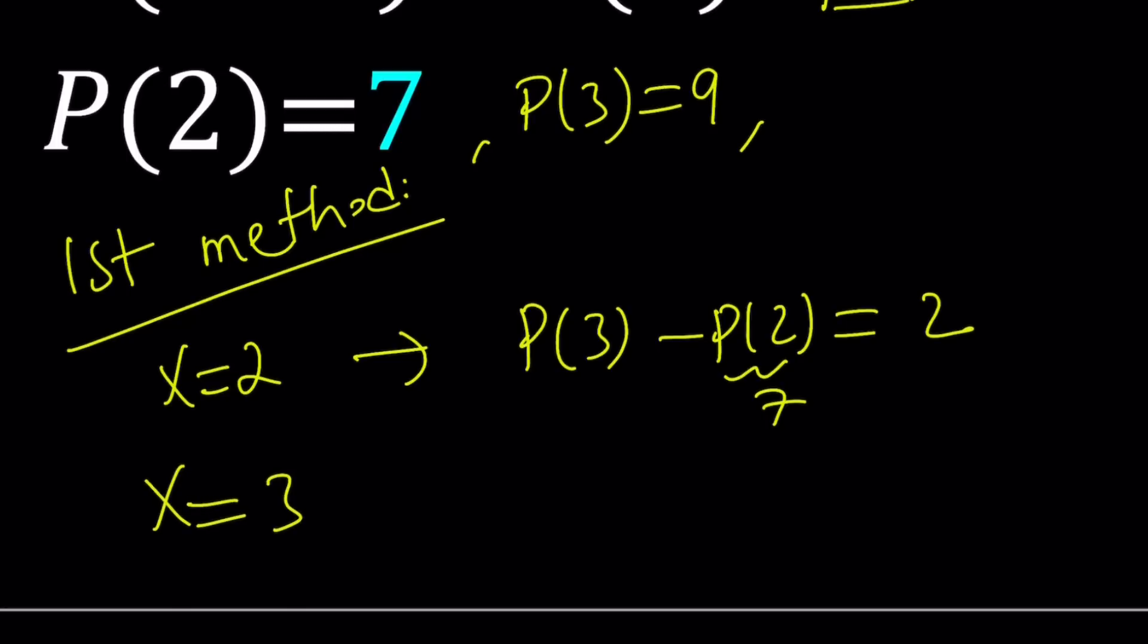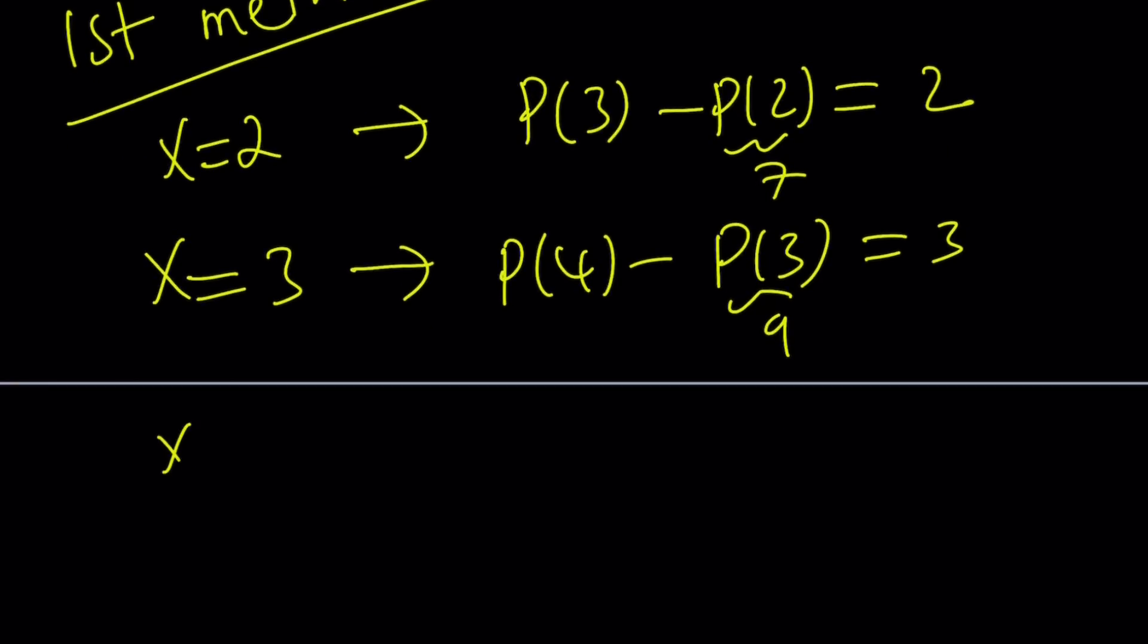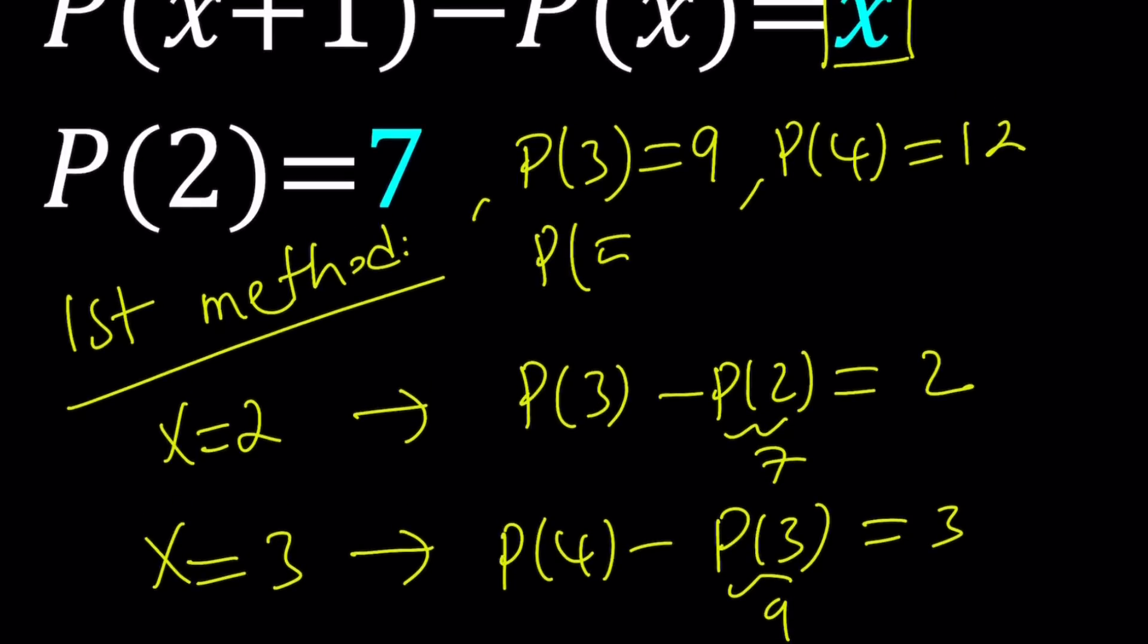And then I'm going to replace x with 3. That's going to give me P of 4 minus P of 3 equals 3, and we know that P of 3 is equal to 9, so that gives us P of 4 equals 12. Normally, three equations or three values would be good enough for quadratic because we can just go ahead and set up a system. But I want to show you something that's really cool. That's why I want to use one more value. So bear with me. x equals 4 gives you P of 5 minus P of 4 equals 4. We know that P of 4 is equal to 12, so P of 5 must be 16. Let's go ahead and write that down as well.